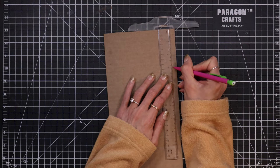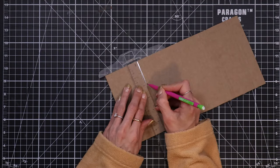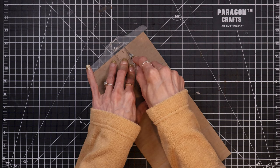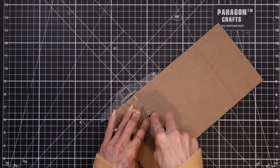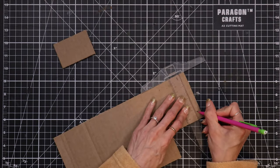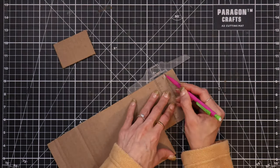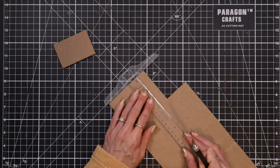I start out by cutting some cardboard for the main structure. I will need a back, a top, a bottom, two sides, and two shelves. I will have all the measurements on the screen and also in the description box.